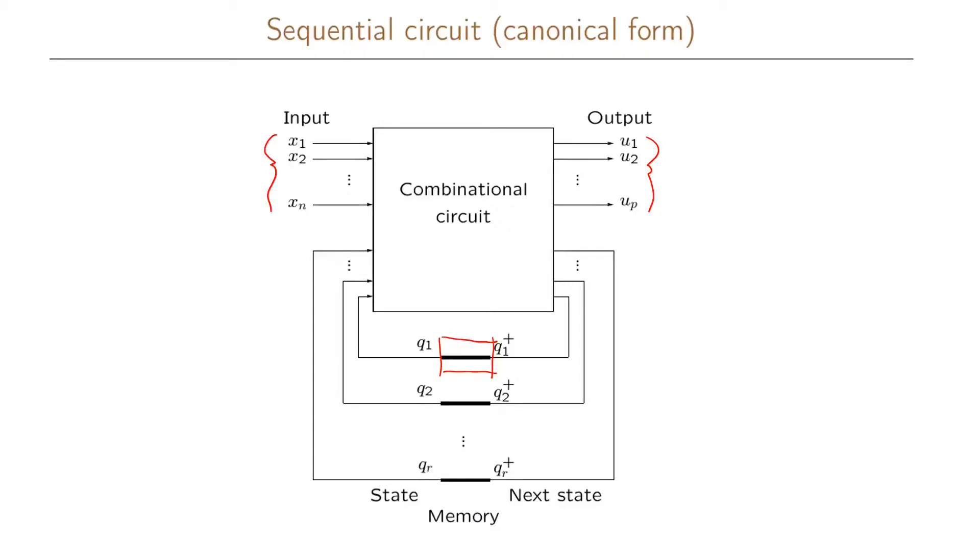Assuming that we have an asynchronous realizable graph, that we have a race-free state assignment and all our functions are hazard-free, it means that we can do this. Our race-free state assignment will ensure that we only change one of these next state variables at a time, and our hazard-free realizations of our boolean functions will make sure that we do not have any transient behavior in any of our variables.